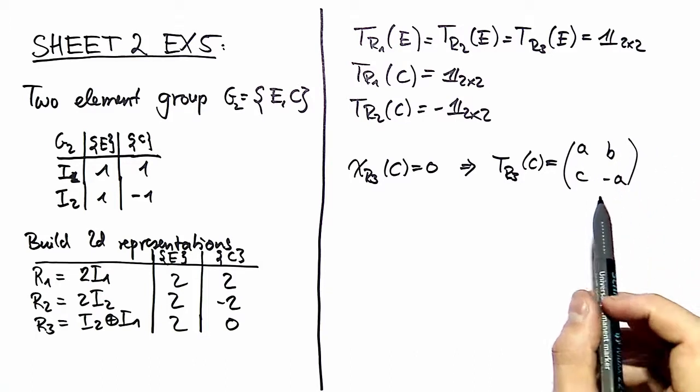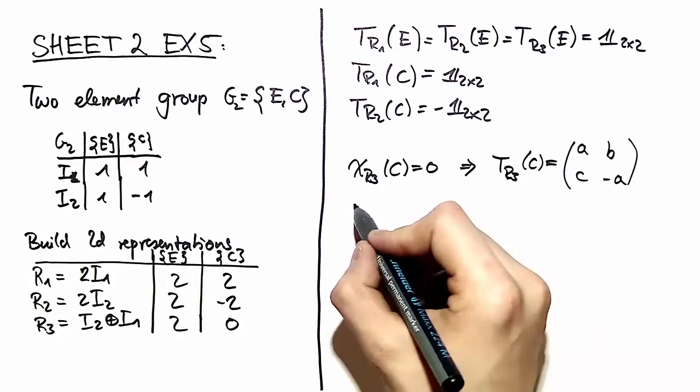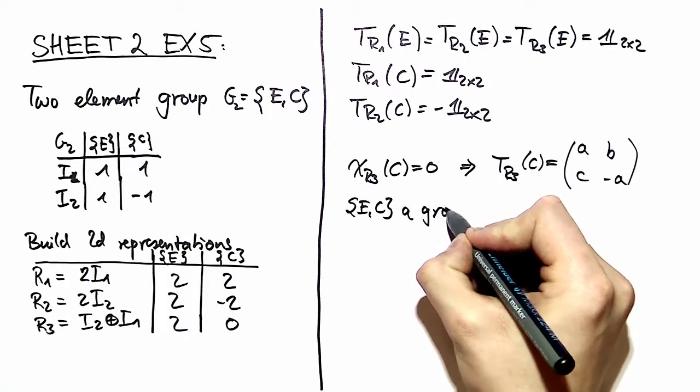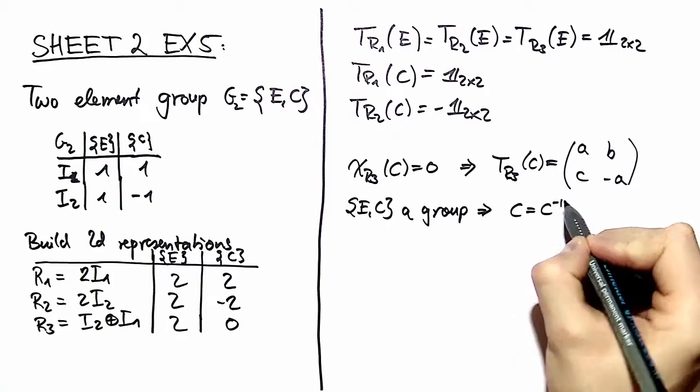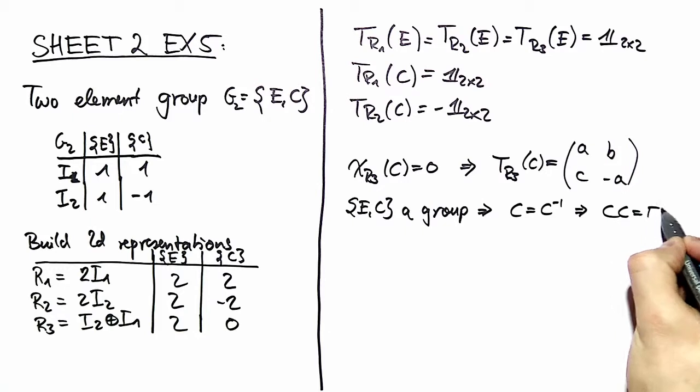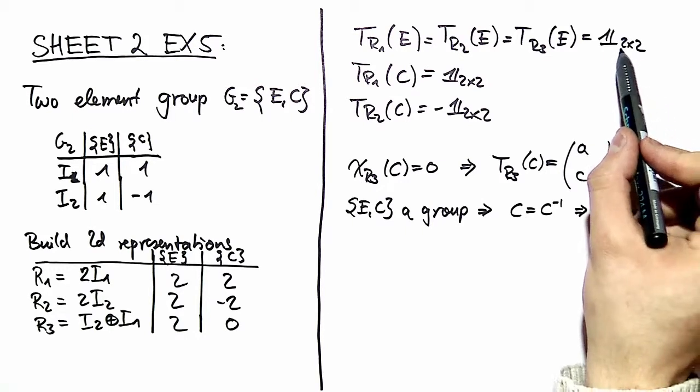Do we have more restrictions on that? And the answer is yes, because we have E and C being a group, and therefore the element C must be its own inverse. That means C times C is equal to the identity. The identity is the identity matrix right here.